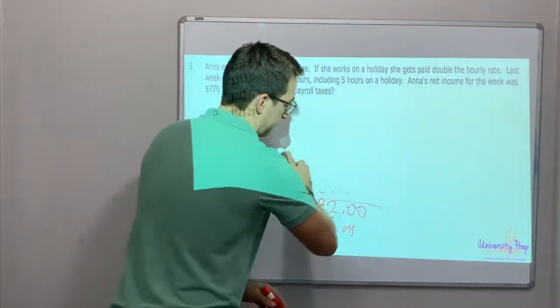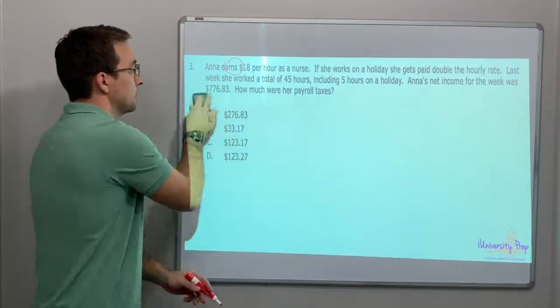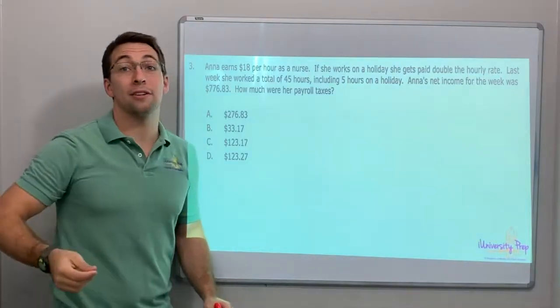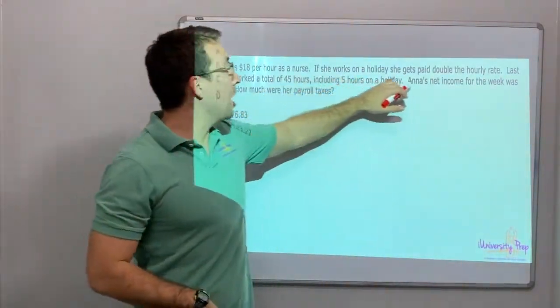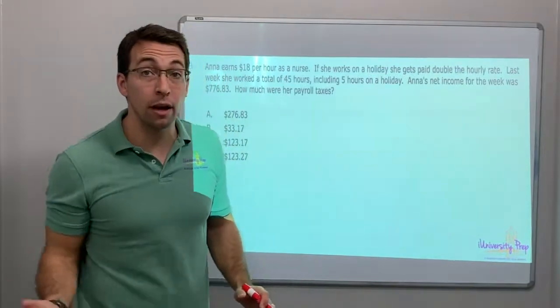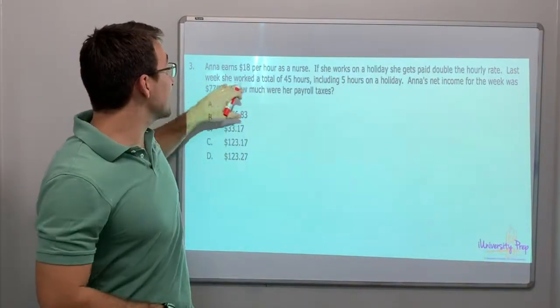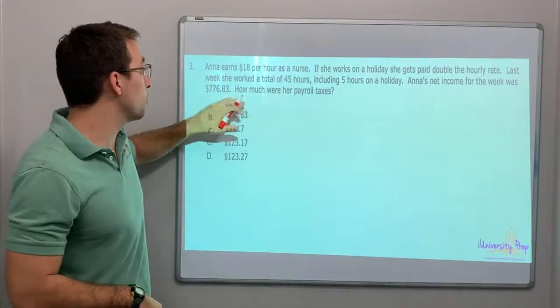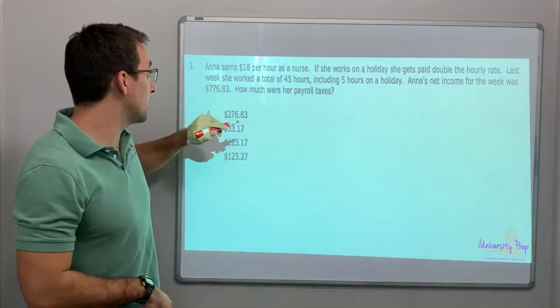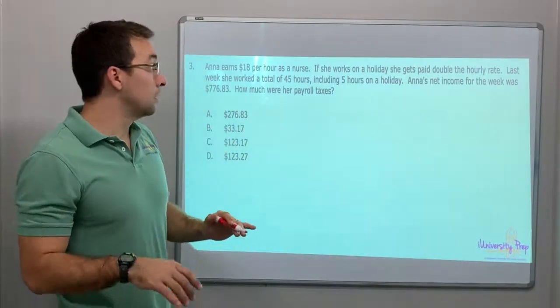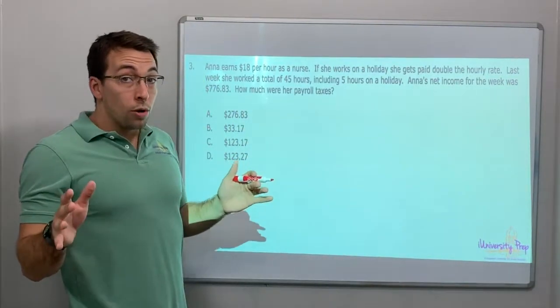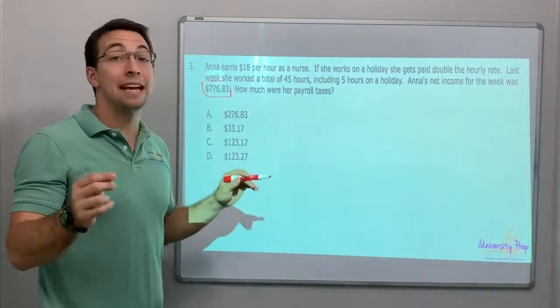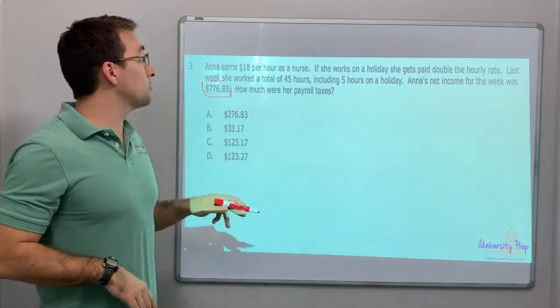Number three. Just a few more questions. Anna earns $18 per hour as a nurse. This question's tough. If she works a holiday, she gets paid double the hourly rate. Last week, she worked a total of 45 hours, including five hours on a holiday. Anna's net income for the week was $776. How much were her payroll taxes? We have to find out how much she made total.